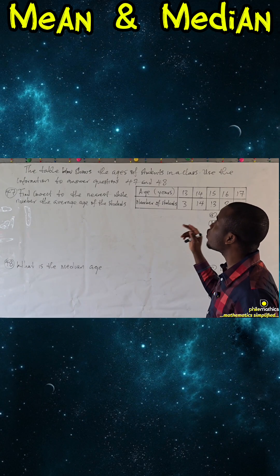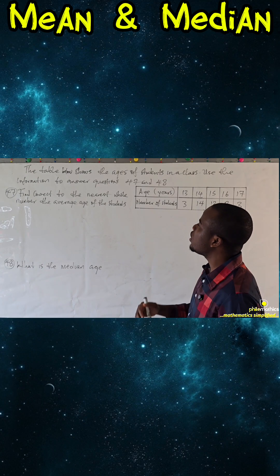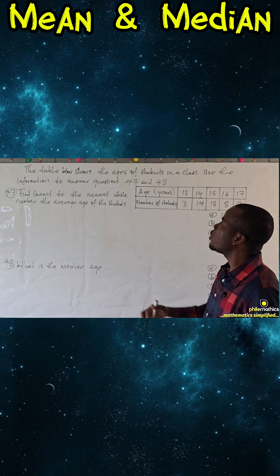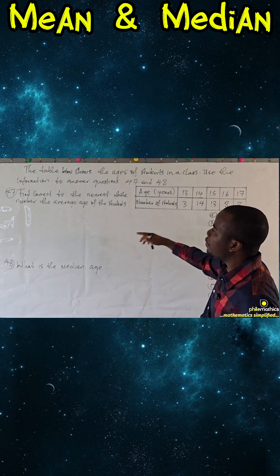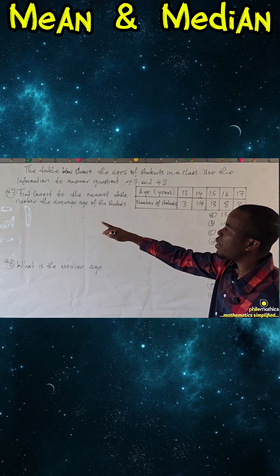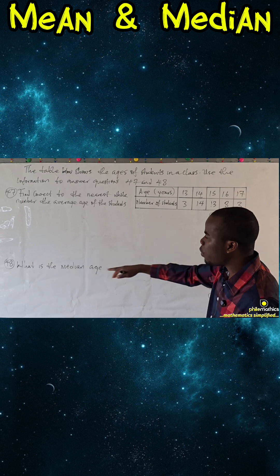The table below shows the ages of students in a class. Use the information to answer questions 47 and 48. Find, correct to the nearest whole number, the average age of the students, and what is the median age?